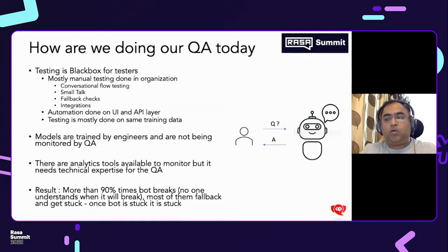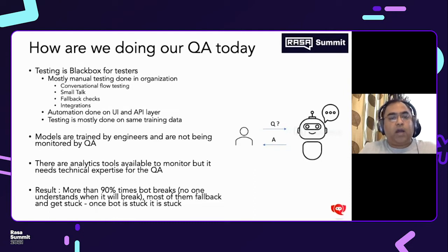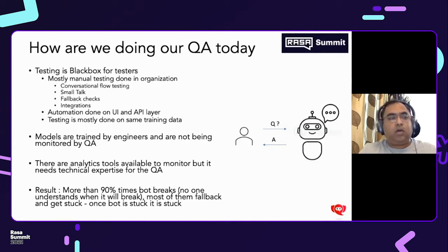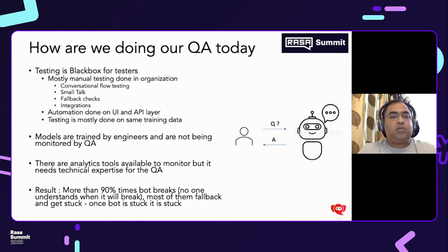How are we doing our QA today? Right now most of the QAs in bigger organizations are all manual. When I say manual, it's really, really complex. What they are basically testing is the conversation — it's just simple QA. So what they would do is they will have a list of stories, the expected conditions, and then they will put it on the chatbot platform and check the actual result. In manual testing there are also small talks, fallback checks, and integration checks for what the chatbot is doing.